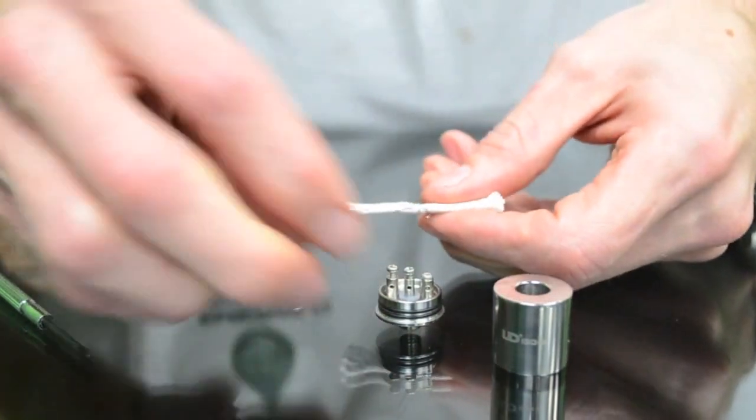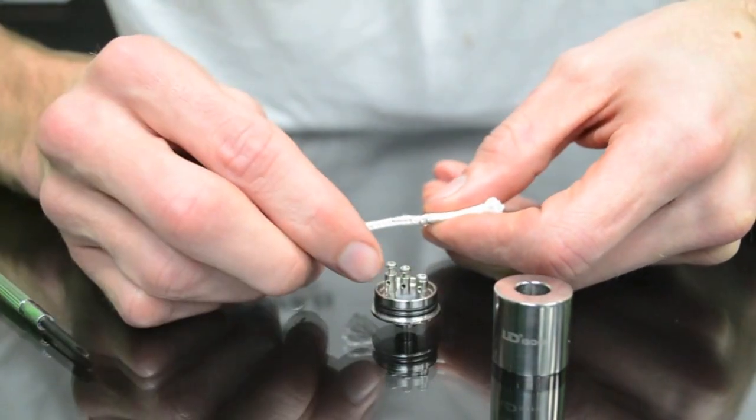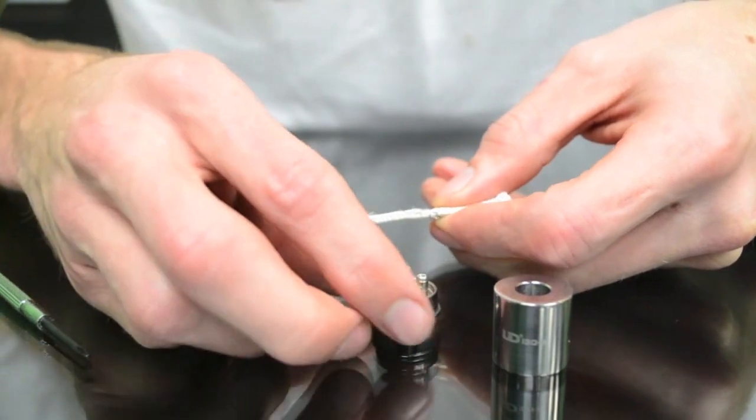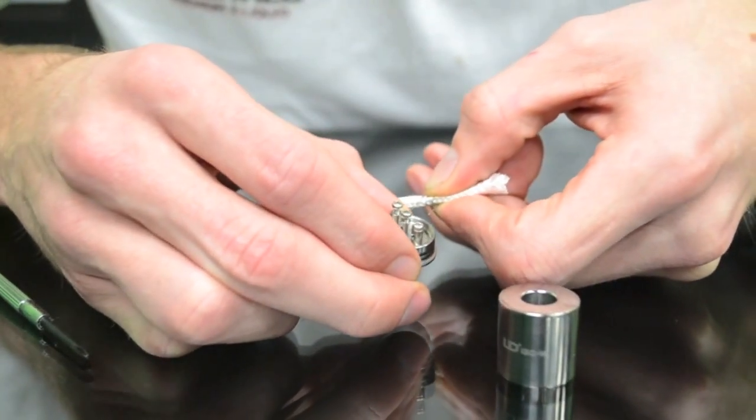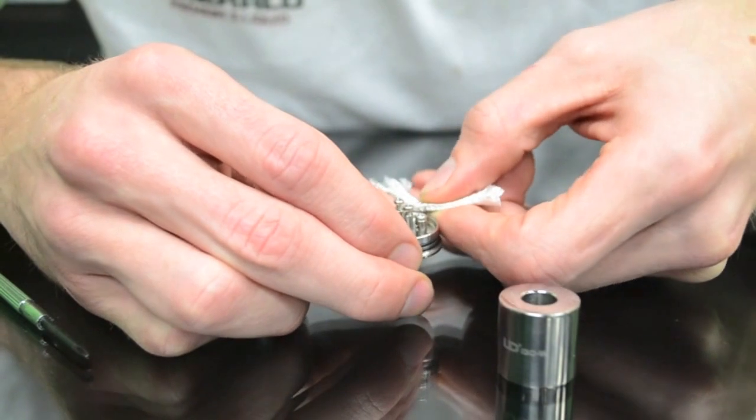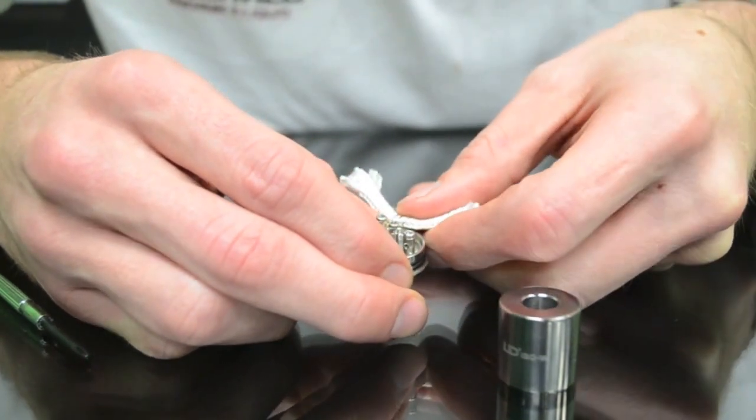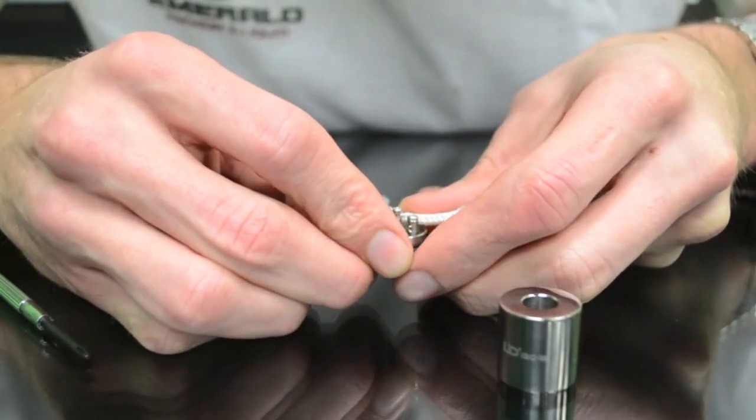Once you have it like that, sometimes they have little holes, otherwise you can wrap it around the screws. But you're going to start with the negative end first, hook it through the hole, wrap it around the screw, and then go with the positive end.